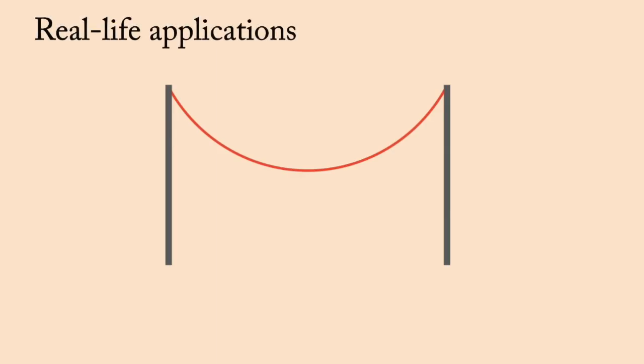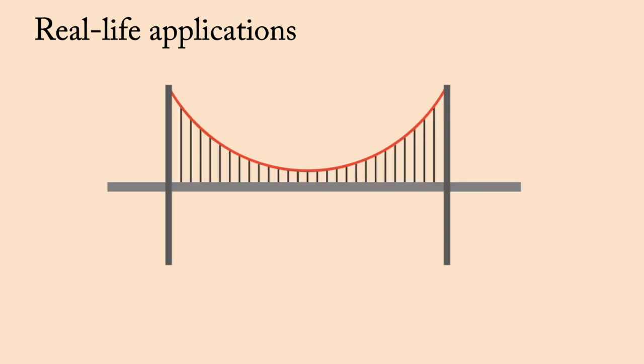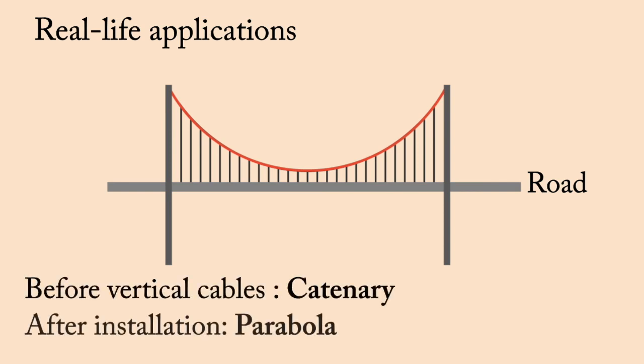Now, where do we see catenary curves in real life? A cable hanging from two vertical supports forms the shape of a catenary. Think of this hanging cable as a part of a bridge and add supporting vertical cables to the horizontal span. Therefore, the horizontal span on which the roadway of the bridge is built is now supported by the vertical cables. However, when the final construction is over, the curve will be a parabola.